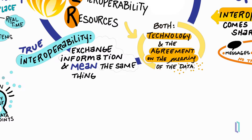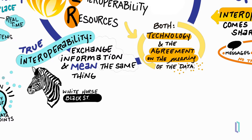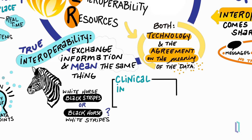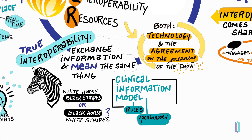While humans are very good at interpreting meaning, computers can only understand exactly what the data says. For example, two people describing a zebra as either a white horse with black stripes or a black horse with white stripes would quickly figure out that these mean the same animal. However, these descriptions are completely different to a computer. To ensure that the same descriptions are used across systems in healthcare, a clinical information model must be used. This includes the descriptions of healthcare data concepts for a particular use case, rules of how the data is used, vocabulary or terminology bindings, and the relationships between data.